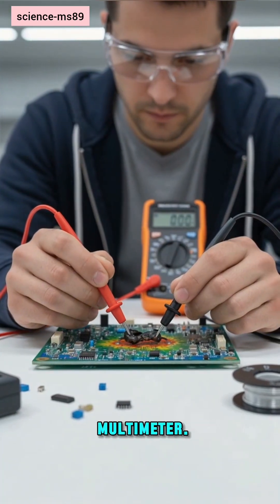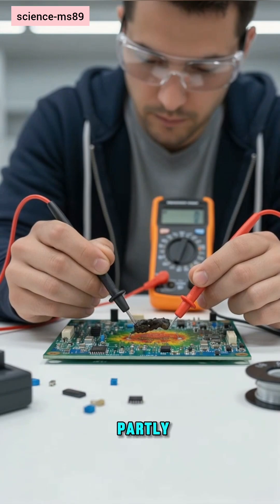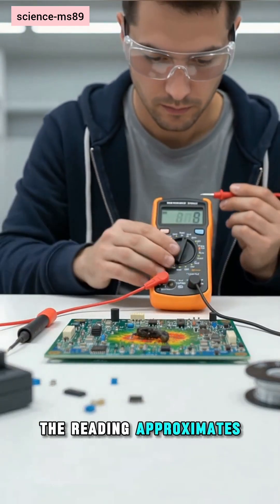Measure with a multimeter. Clip one leg to avoid parallel paths. If partly intact, the reading approximates the original value.